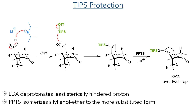In the next step, the cyclopentanone was protected as a TIPS enol ether. Reacting the compound with LDA at minus 78 degrees Celsius first deprotonates the least sterically hindered proton, forming the kinetic enolate which was then silylated by TIPS triflate. Reacting this with PPTS isomerises the silyl enol ether, forming the thermodynamic product with the more substituted double bond. This allowed the researchers to selectively protect the cyclopentanone in the presence of the cyclohexanone, forming the target in an 89% yield over two steps.